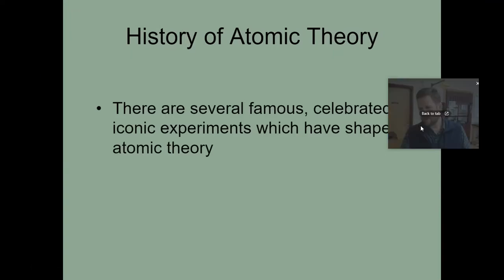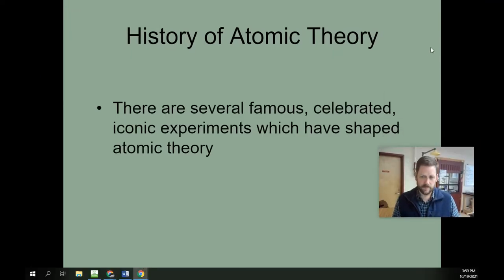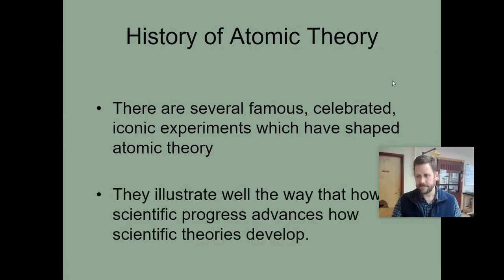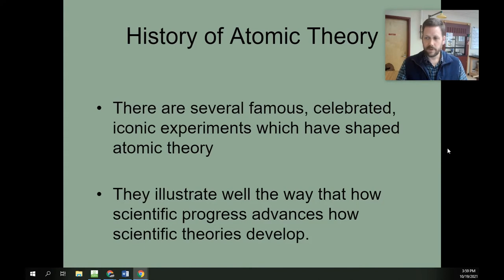Now, the idea behind this whole presentation is that there's been several famous or celebrated experiments or ideas throughout history which have shaped atomic theory. It also illustrates well just how science works. There are working theories that are based on the data we have available, and eventually new data becomes available which renders the theory obsolete or needed to be revised. Of course, some of that process is really about the scientific method. We're going to start well before the scientific method is really established, but as we go through the centuries, you'll see how scientific theories develop and how scientific progress is made.